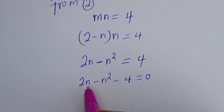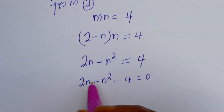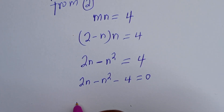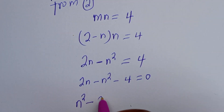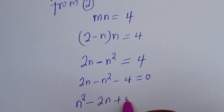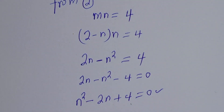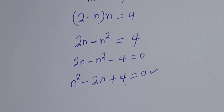We have 2n minus n squared minus 4 equals 0. Let's rearrange this by multiplying all terms by minus 1. We have n squared minus 2n plus 4 equals 0. This is a quadratic equation which can be solved with the quadratic general formula.